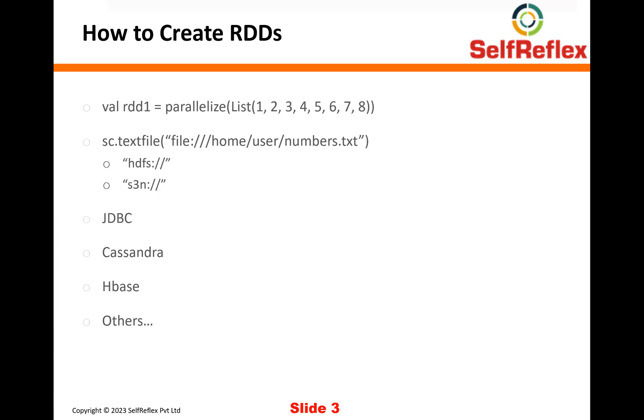Now how do you create an RDD? So your source data could be present in a text file, it could be present in a distributed file system, in a database, in a NoSQL database like Cassandra, or there could be hundreds of other source systems where your data is present. So Spark does provide a lot of options for you to actually read data from these sources and then convert that into an RDD. The entry point into Spark to create an RDD is a Spark Context object.